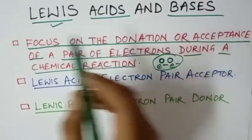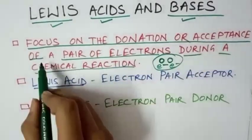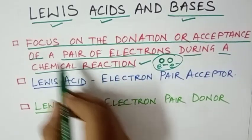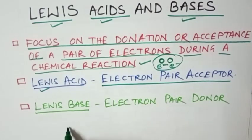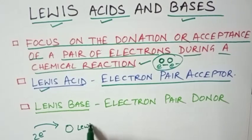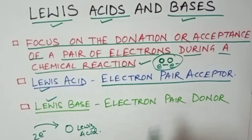Next we will see about Lewis acids and bases. This concept focuses on the donation or acceptance of a pair of electrons during a chemical reaction. If some compound is accepting two electrons, that is one pair of electrons, it will be called Lewis acid. Similarly, the electron pair donor is called Lewis base.